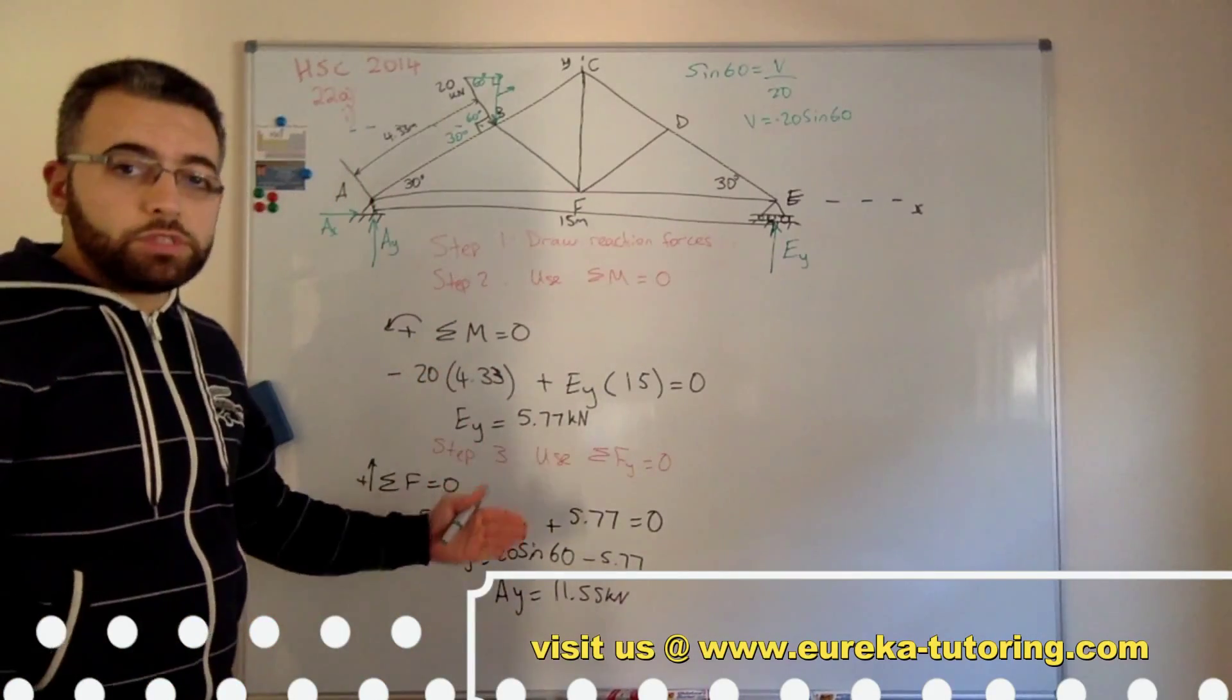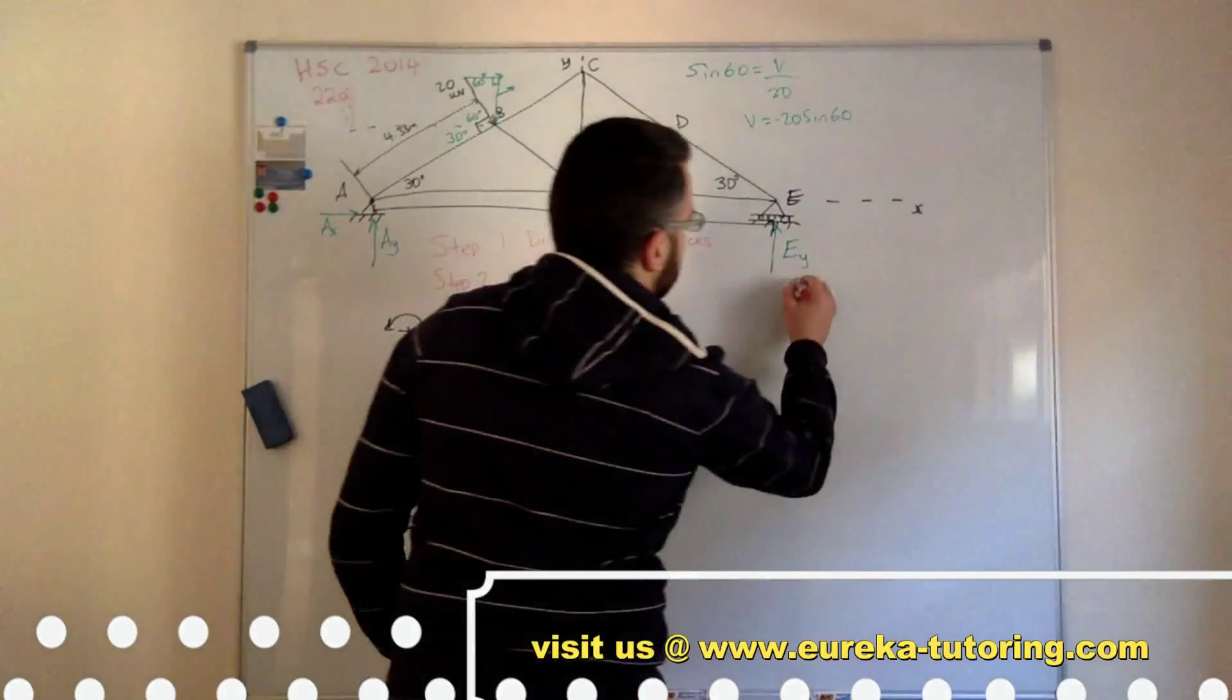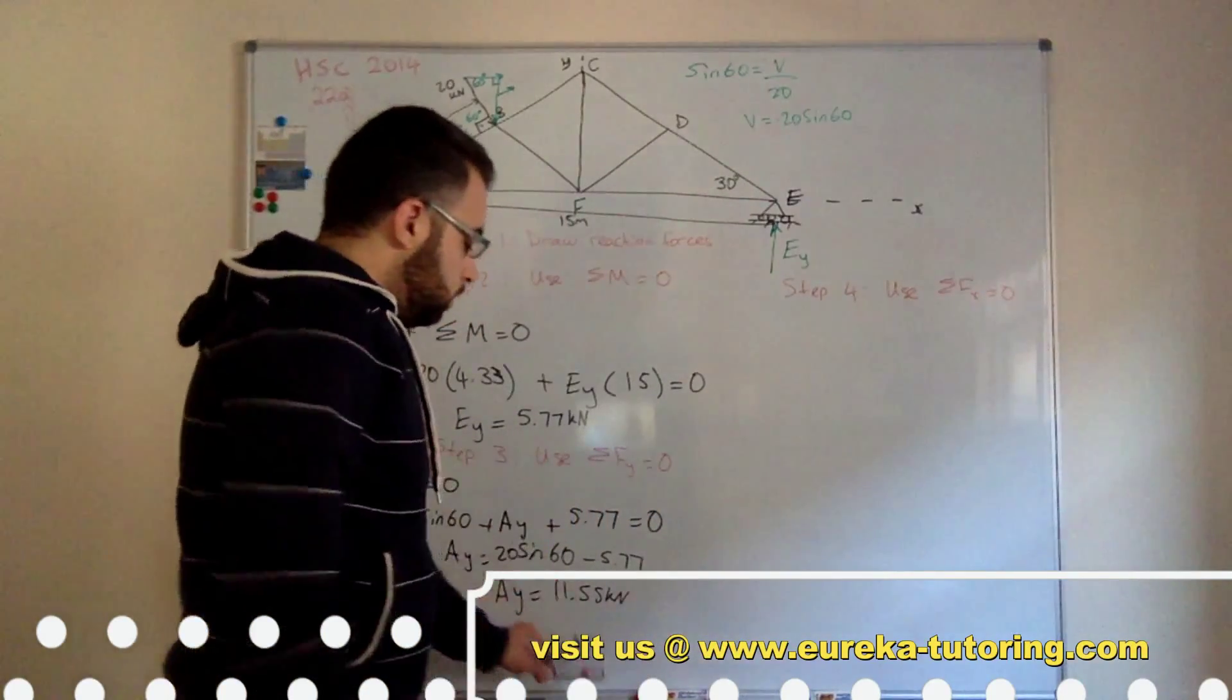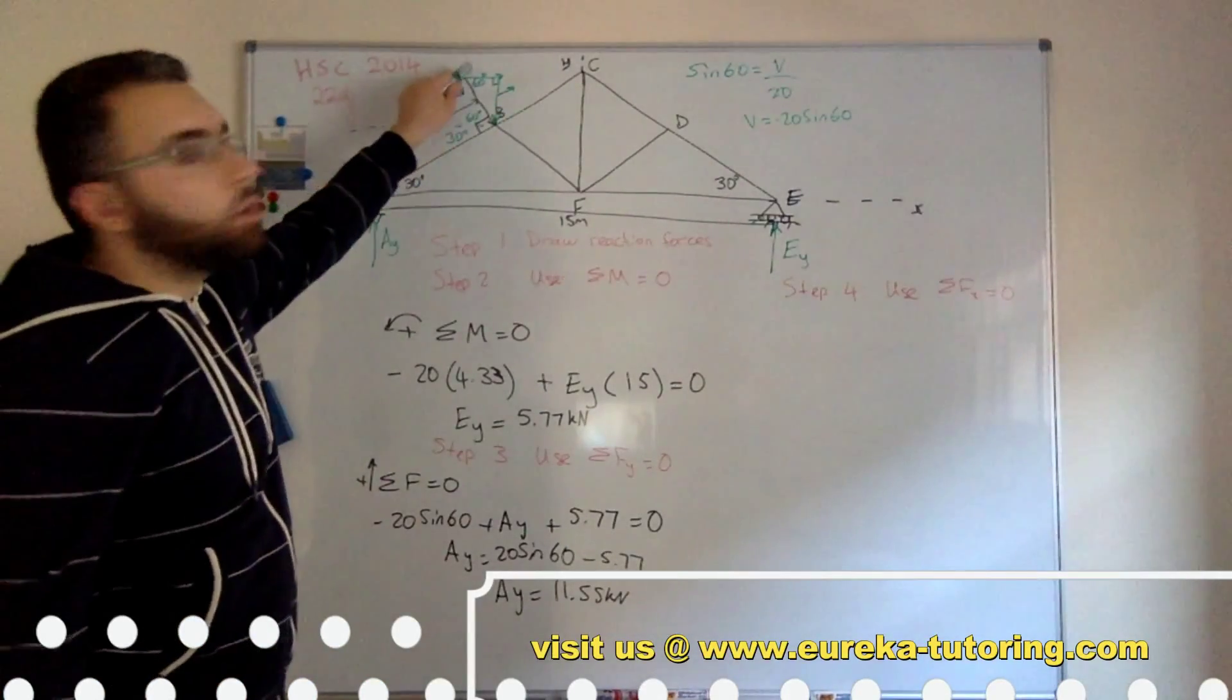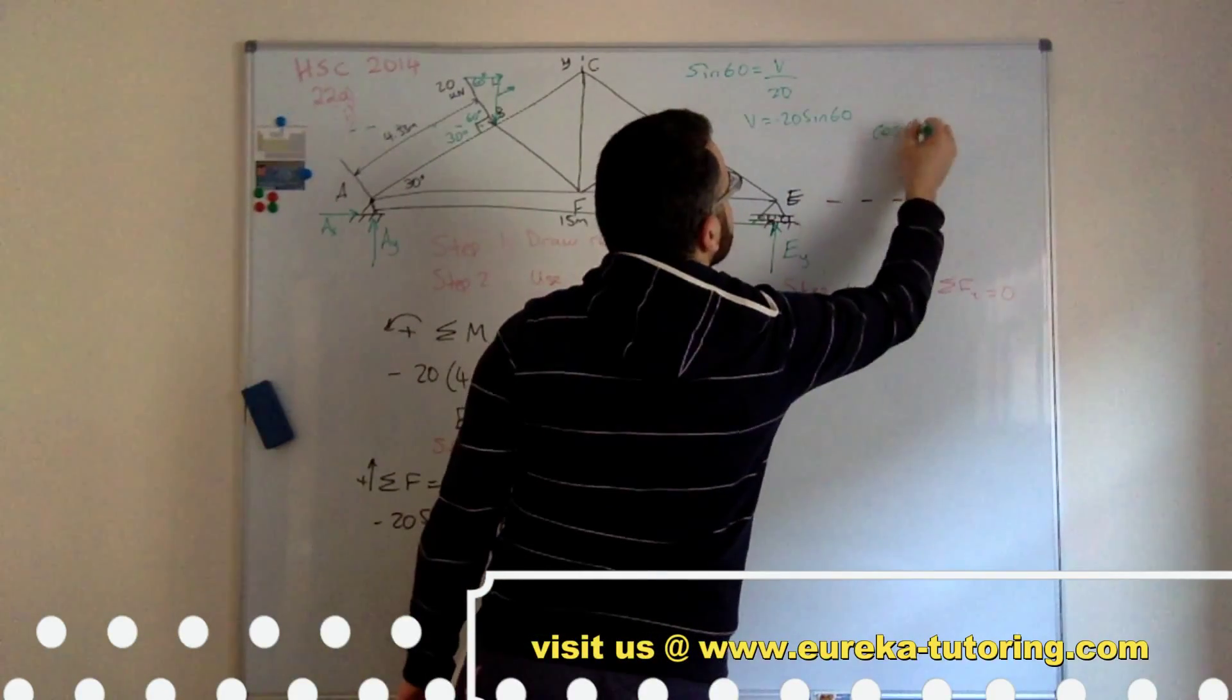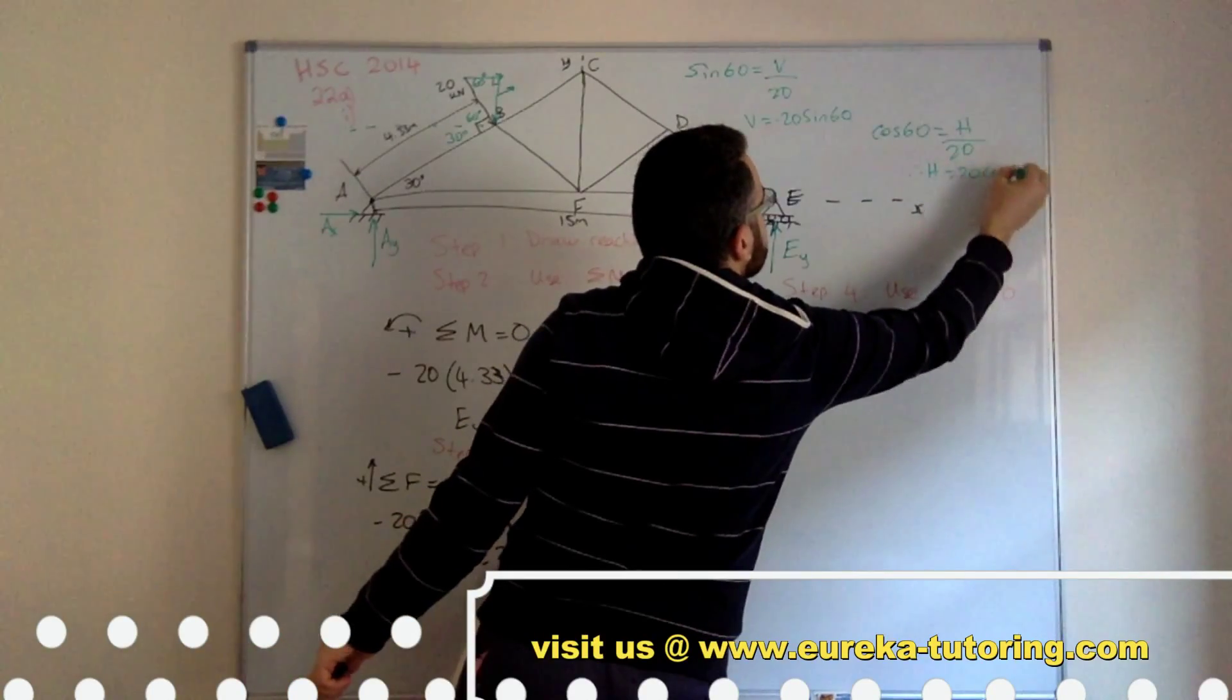Now, once we've done sum of forces, we are going to move on to sum of forces in the horizontal direction. So step 4. So now I have to break this. We've already broken this into its horizontal vertical. Now I need to find its horizontal component. So this is adjacent and this is hypotenuse, so we'll be using cos. So cos 60 equals adjacent, which is the horizontal, over the hypotenuse, which is 20. Therefore, H equals 20 cos 60.